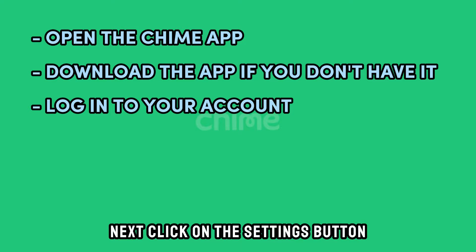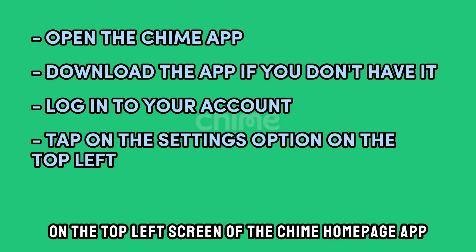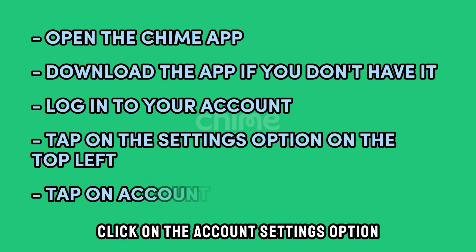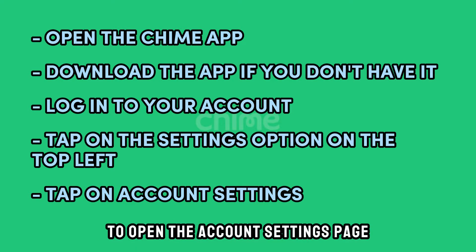Next, click on the Settings button on the top left screen of the Chime homepage app. Click on the Account Settings option among the displayed options to open the Account Settings page.